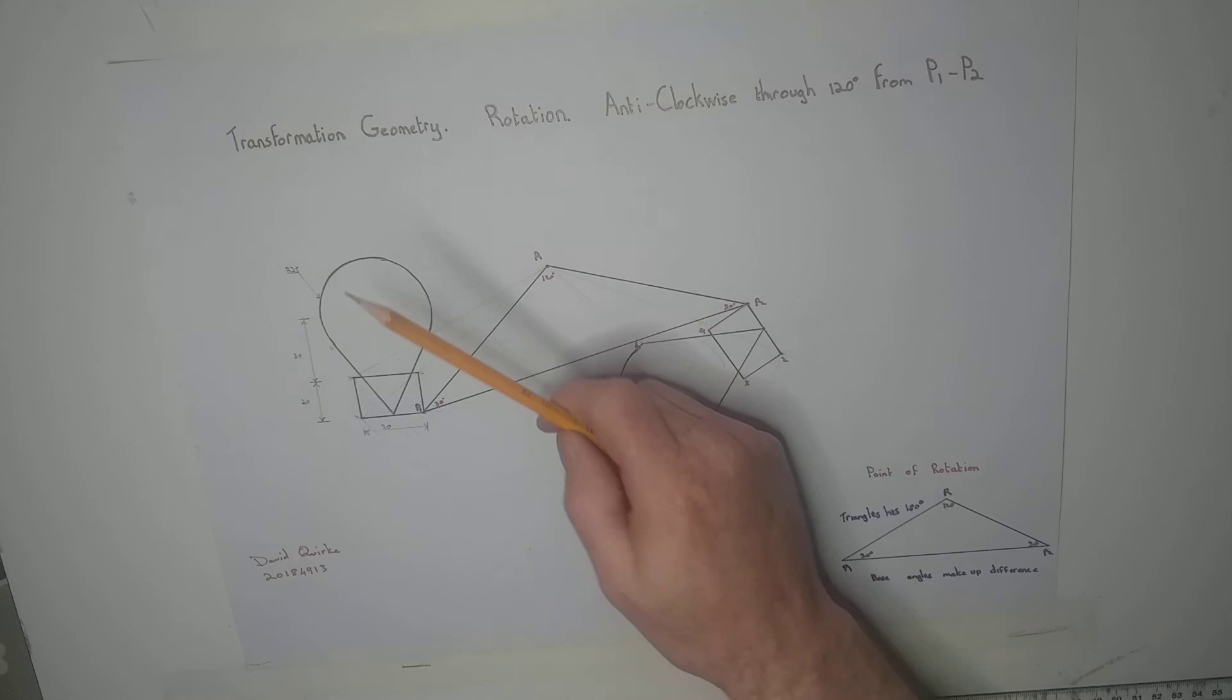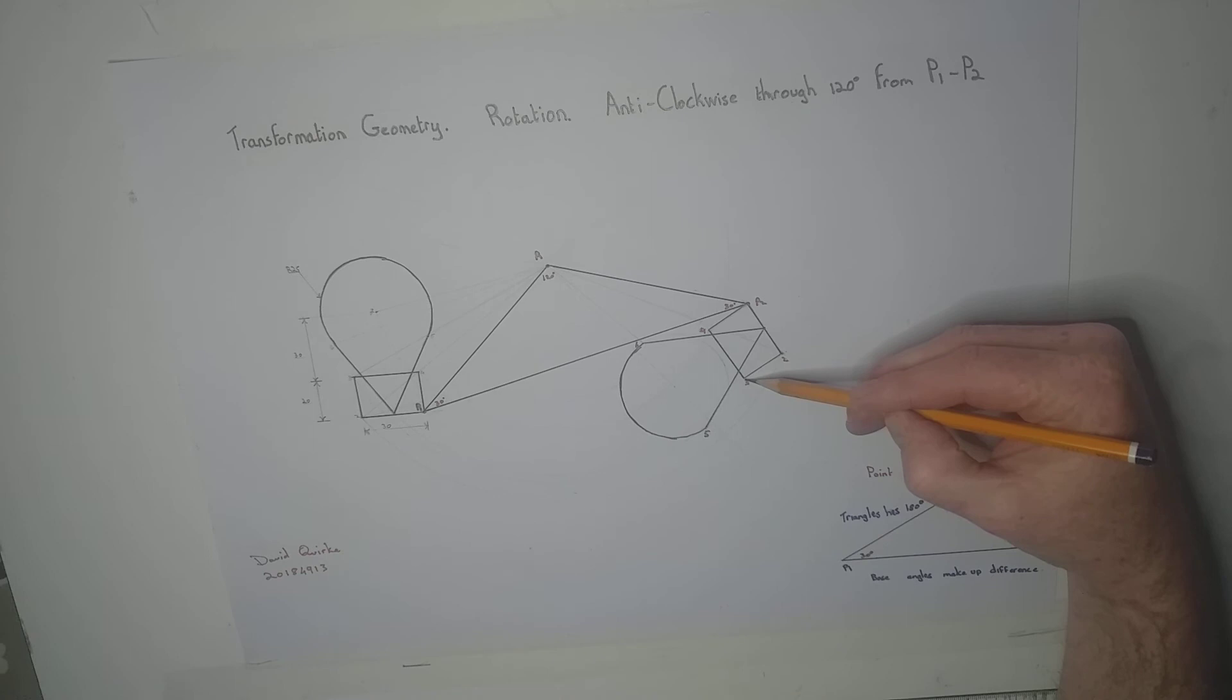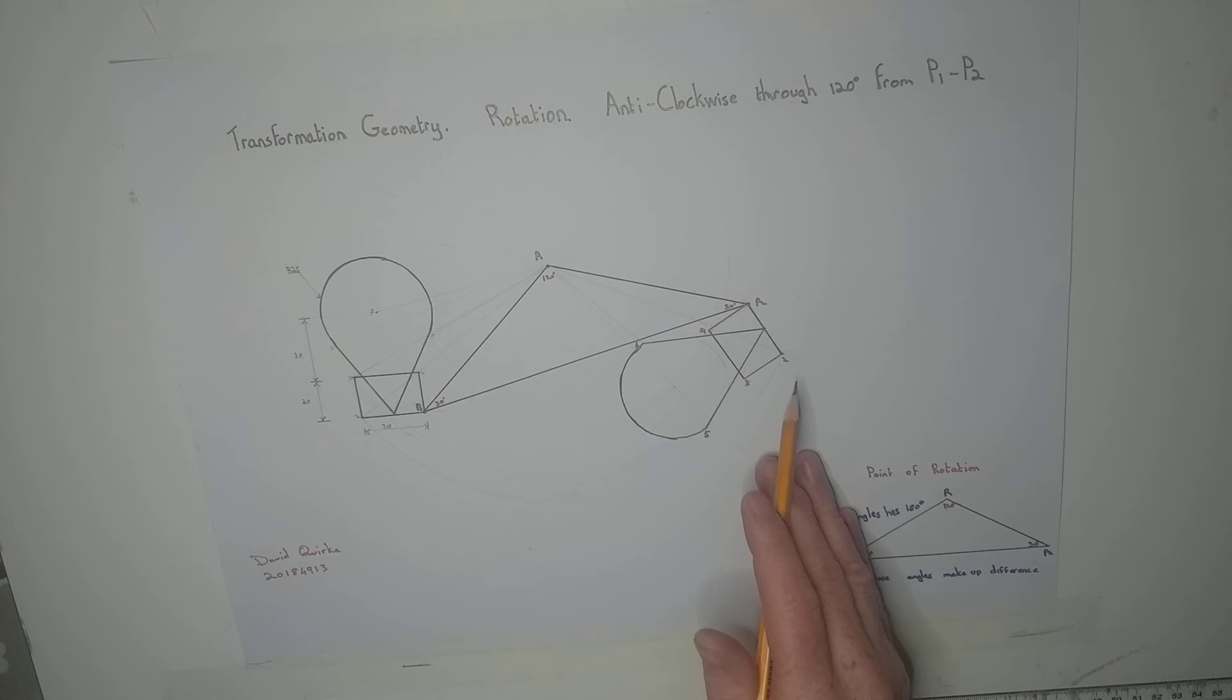It's basically being moved over here. I did the same for point 3. I swung it around, joined 3 to our point of rotation, marked that line, marked off 120 degrees here, which gave me this point, and I joined to 2.